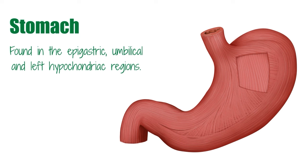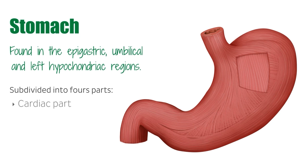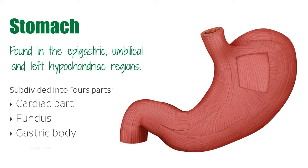The stomach can be subdivided into four main parts: the cardiac part, the fundus, the gastric body, and the pyloric part. The structure of the stomach is similar to the rest of the GI tract and is composed of mucosa, submucosa, and a muscular layer. I'll talk a bit more about these layers later on in the tutorial.